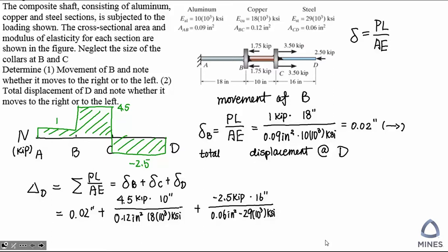Watch the units — everything is in kip and inches, so we can put all the numbers into the calculator. The final movement at plane D with respect to the fixed end A is a specific value. It's positive, which means it will go to the right.